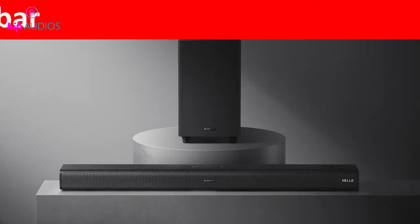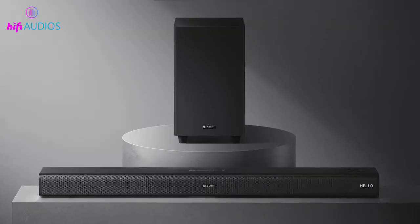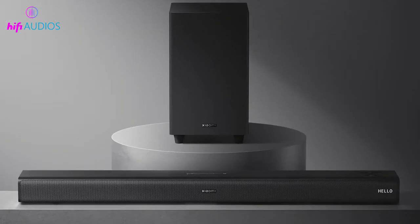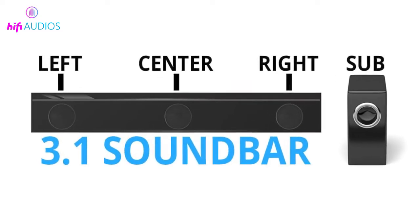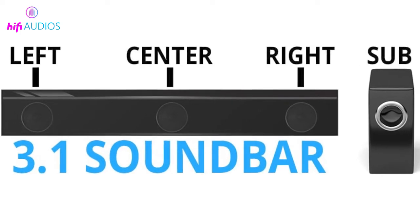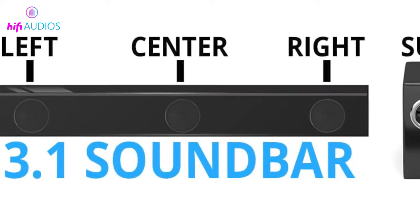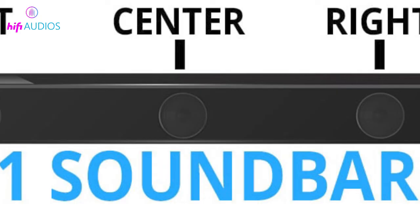A 3.1 channel soundbar comes with three speakers — right, left, and center channel — and a subwoofer. The center channel significantly improves the quality of dialogue in movies and TV shows.